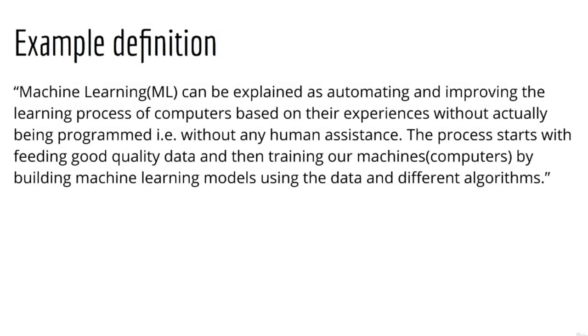Here's another one. Machine learning can be explained as automating and improving the learning process of computers based on their experiences without actually being programmed, without any human assistance. The process starts with feeding good quality data and then training our machines by building machine learning models using the data and different algorithms. Again, very generic, but no substance.